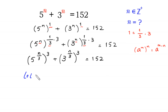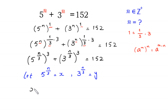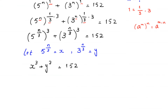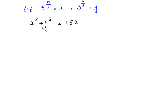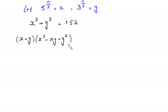We suppose that 5 to the power n/3 equals x and 3 to the power n/3 equals y, and we substitute x and y into this equation. Then this equation becomes x cubed plus y cubed is equal to 152.